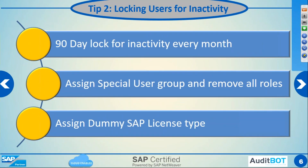Tip number two: lock users for inactivity. All companies running SAP should have a policy on user inactivity — it could be 90 days or 180 days. Periodically, users have to be reviewed to see whether they have not logged in for 90 days, and then lock and expire them. Assign a special user group and remove all the roles, putting them in a group called 'expired' or 'locked' so that they can be reprovisioned if they come back. Assign a dummy license type — these users should be assigned license type 99, which is a dummy license type. Once they are locked and expired, you assign that dummy license type.